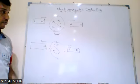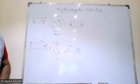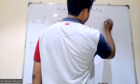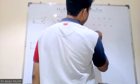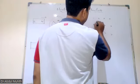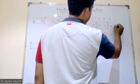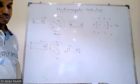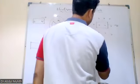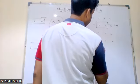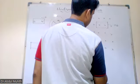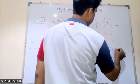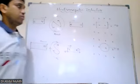So this type of questions can be there. We'll do one example question. There is a rectangular loop placed in the magnetic field, moving out of the field with velocity.